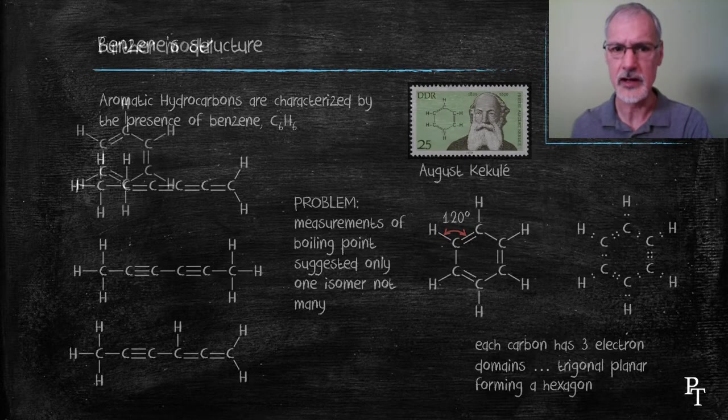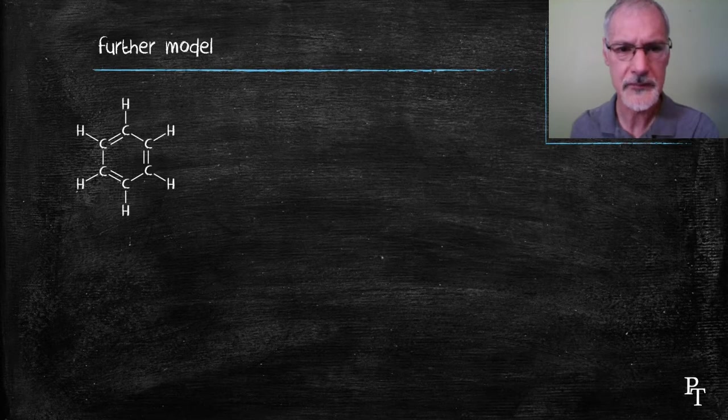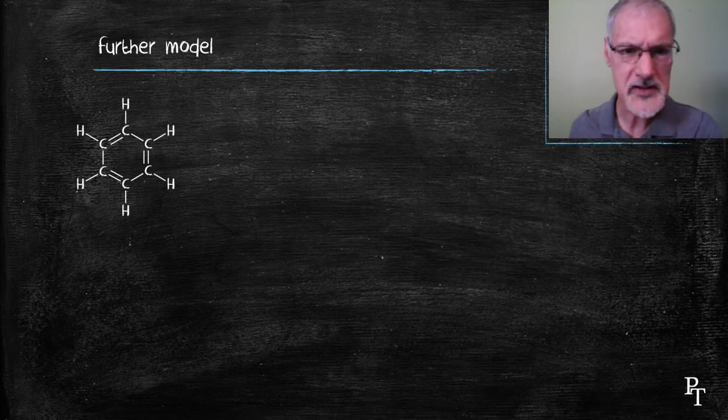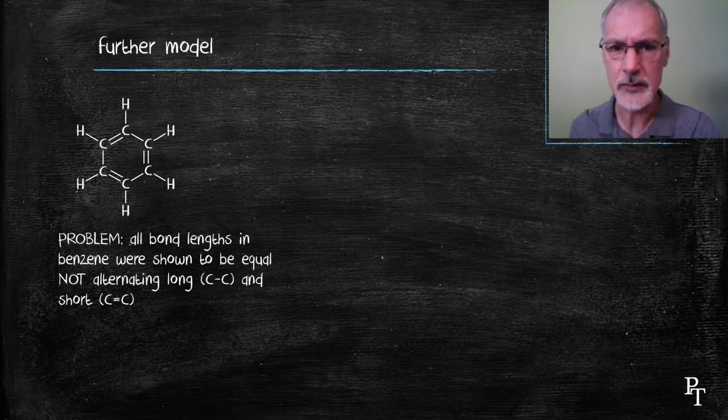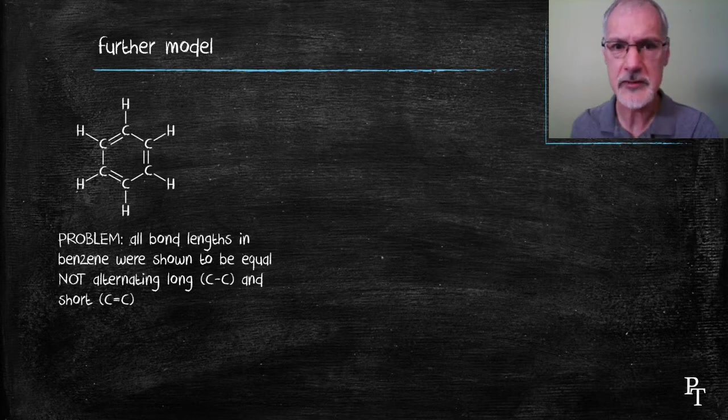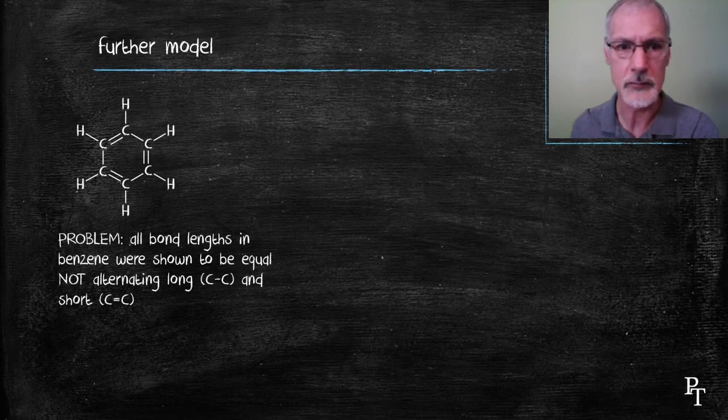This structure too has undergone further evolution. There's a small problem with the structure from experimental evidence. The presence of the carbon-carbon double bond followed by a carbon-carbon single bond would suggest different bond lengths. Double bonds are shorter than single bonds, so we should see alternating long-short bonds as we move around the circle, but that's not the case.